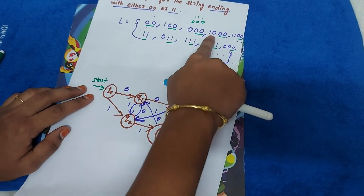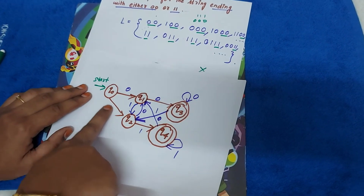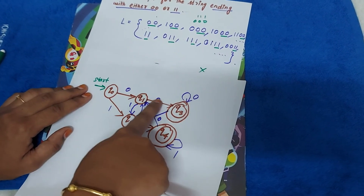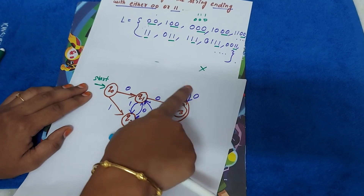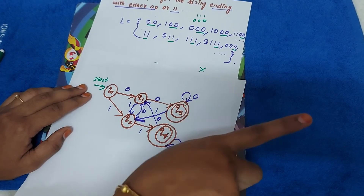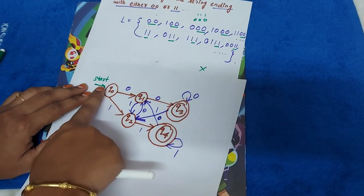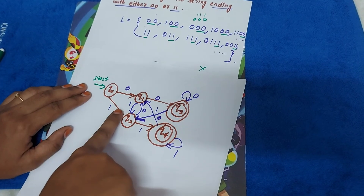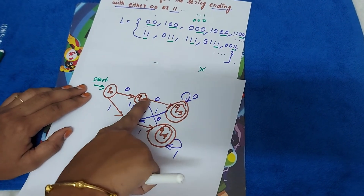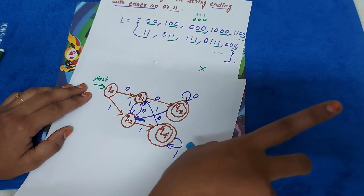One-zero-zero-zero: one, zero, zero, zero — any number of zeros — yes it is accepted. One-one-zero-zero: one, one, zero, zero — yes it is accepted, ending with double zeros.